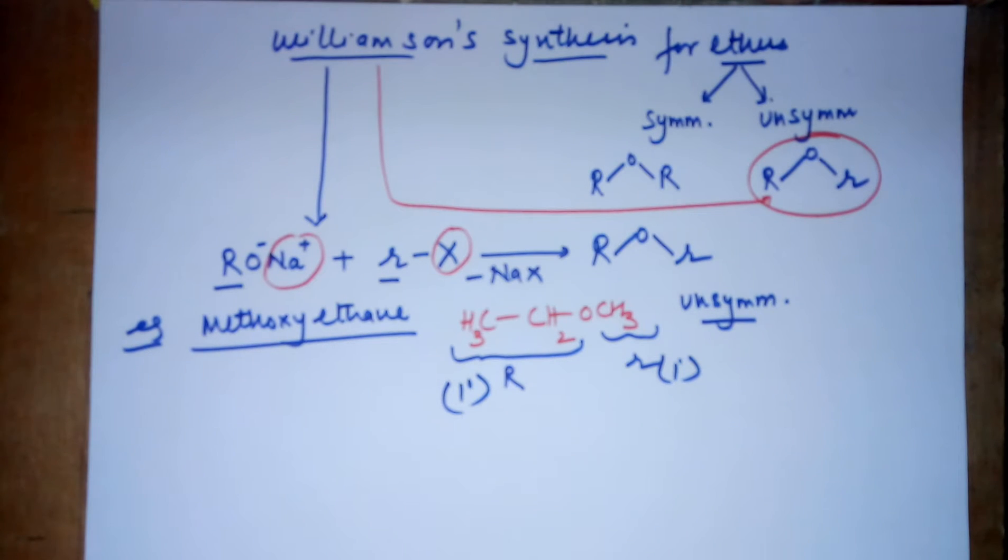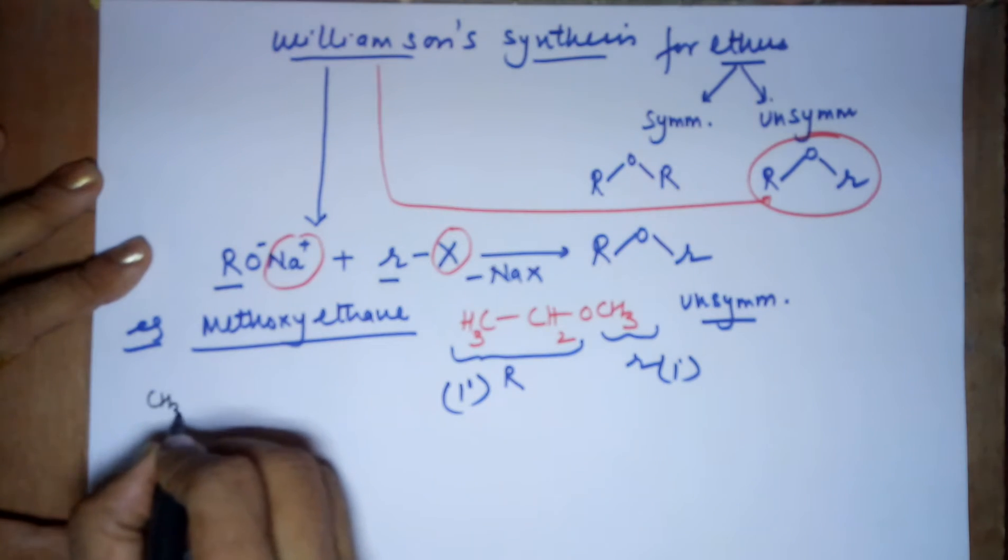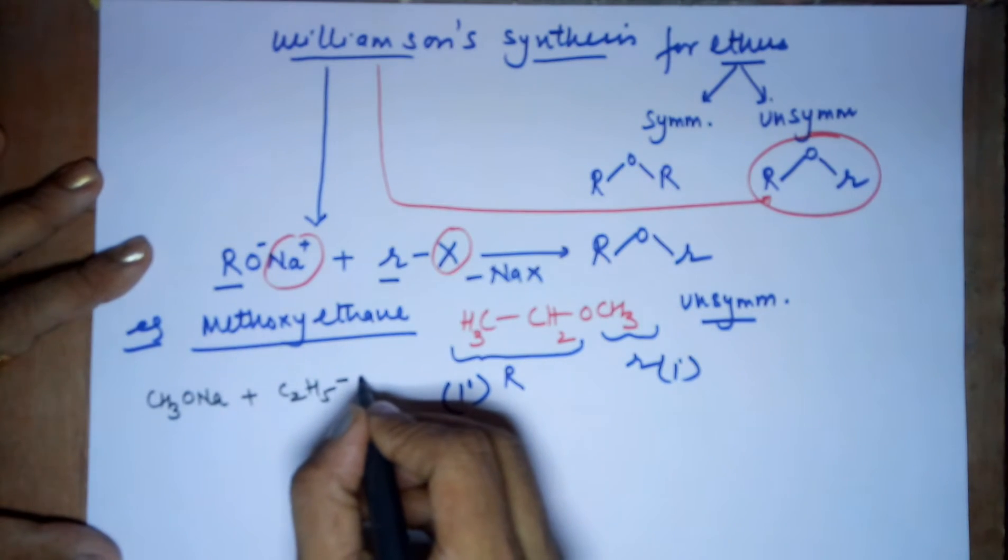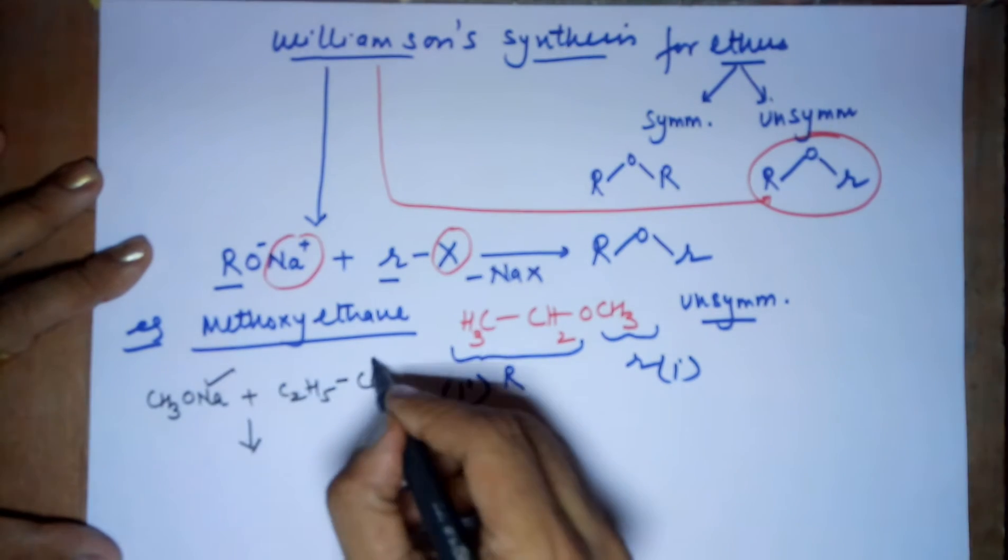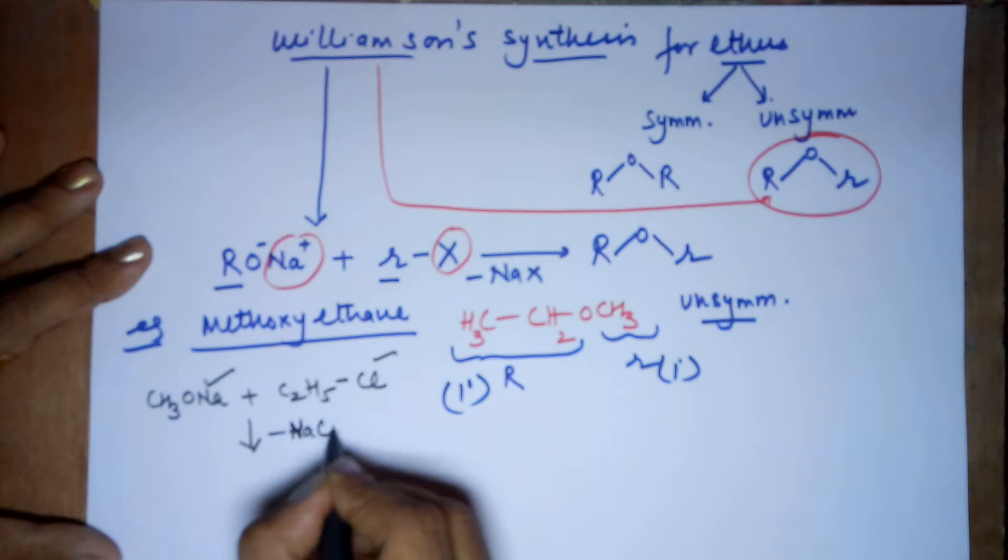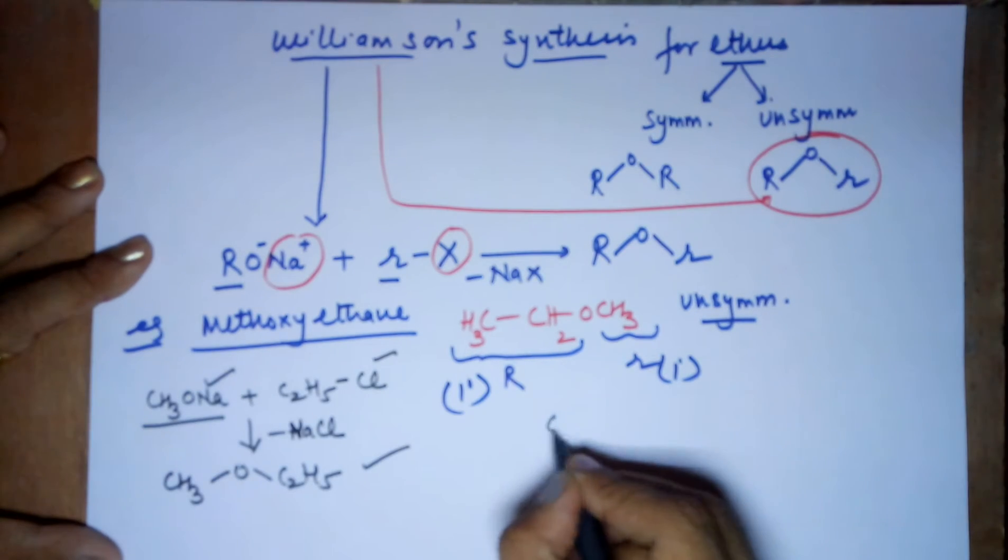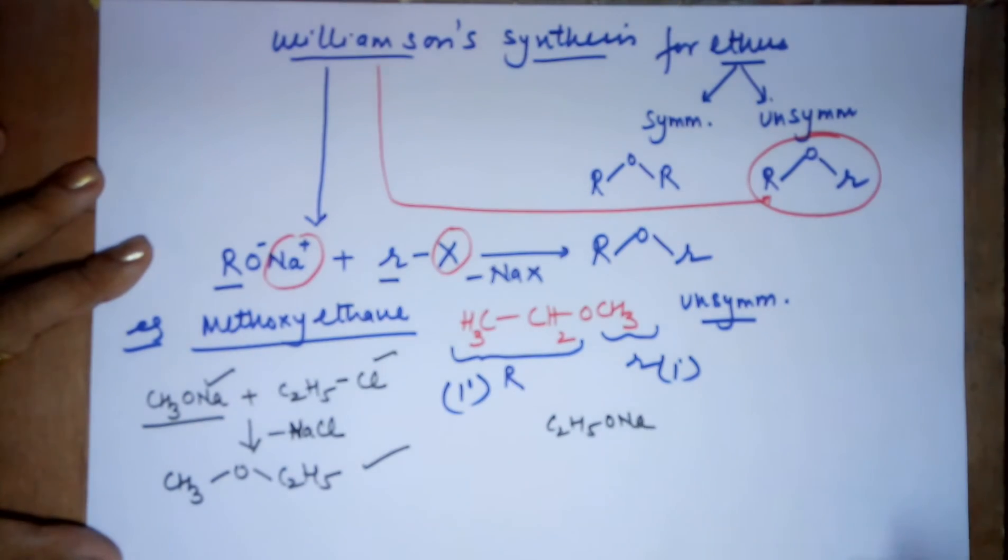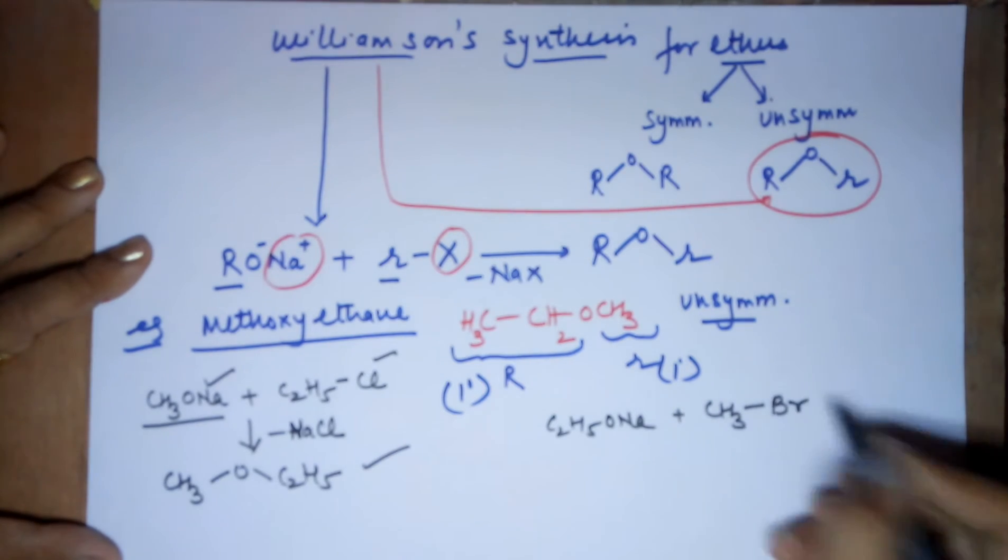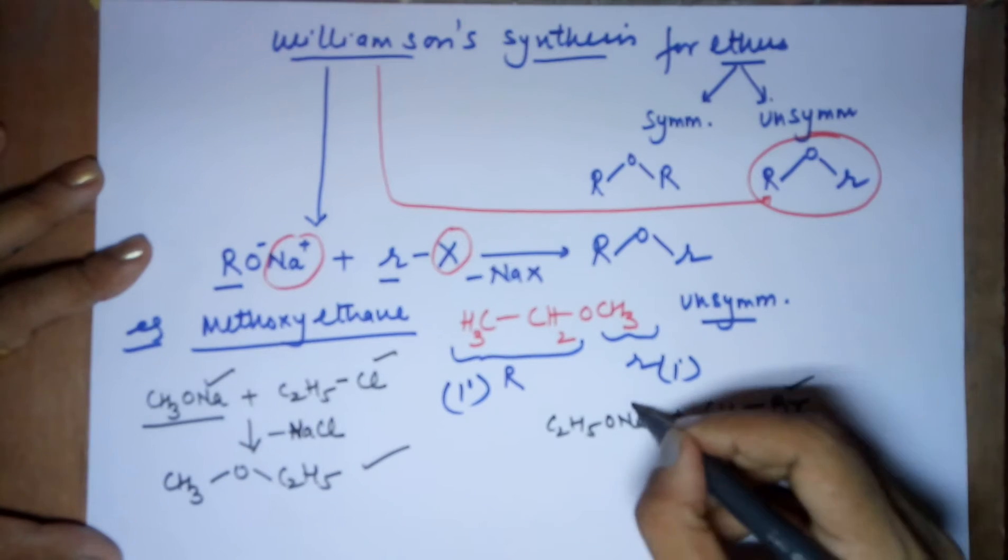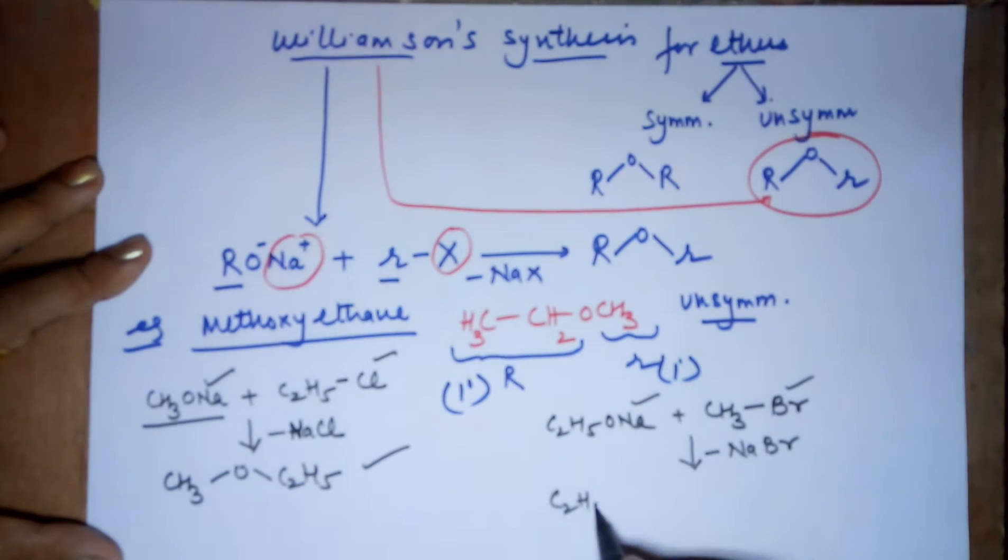Now if I want to prepare this particular ether, I have 2 choices. The first choice is, I use CH3-O-Na and I use C2H5-Cl to get me the product. Your Na and Cl will be removed. You will be ending up with CH3-O-C2H5. That's fine. The other method to do the same thing could also be that you could take O-Na from the ethyl side and your CH3 could be the halide, it could be a bromide, it could be an iodide. And now, if you make them react, your by-product is going to be NaBr. What are you left with? C2H5-O-CH3.